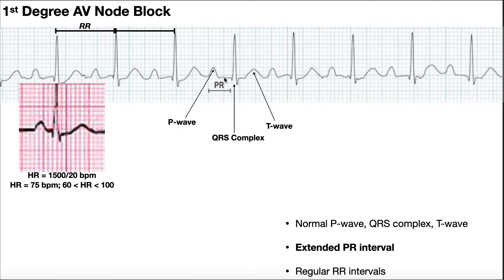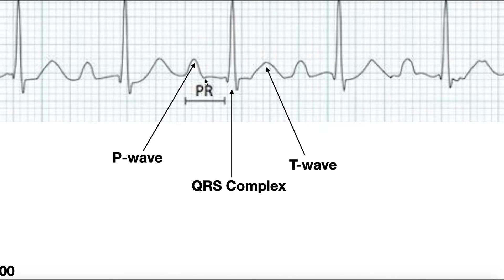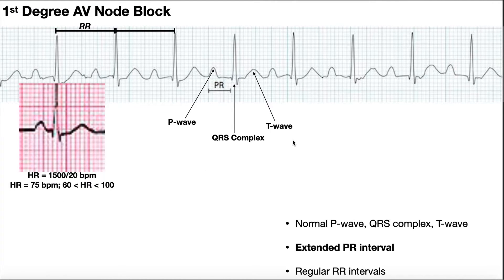I don't really like counting boxes. One thing you should get good at is eyeballing the horizontal line between the end of the P wave and the start of the QRS. If you look at enough of these, you can tell if that line is elongated. This one is really short, so I know it's not elongated without even measuring. But this distance between the end of the P wave and the start of the QRS looks pretty elongated — so even without measuring, I could say it's probably an AV node block.